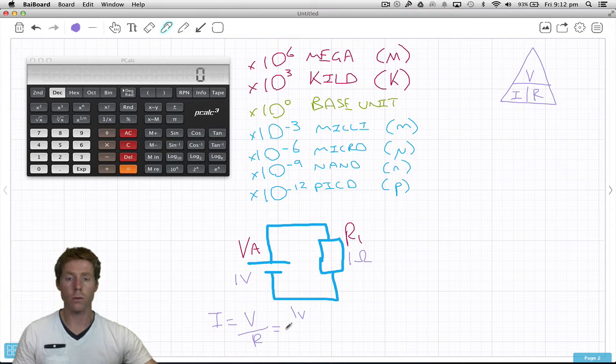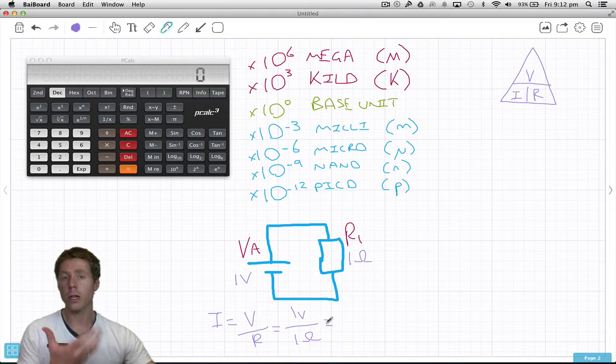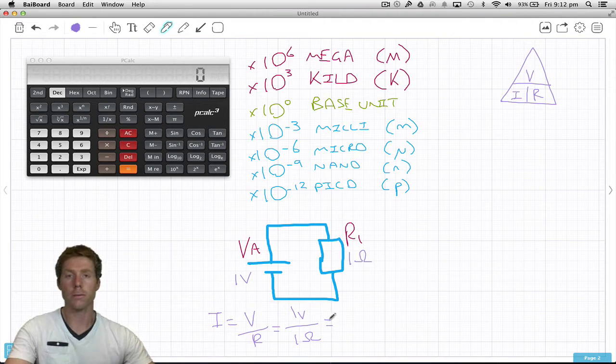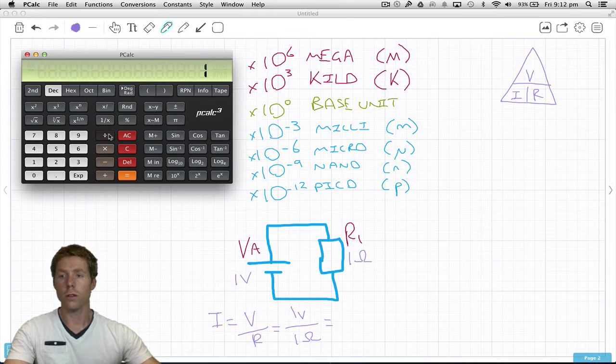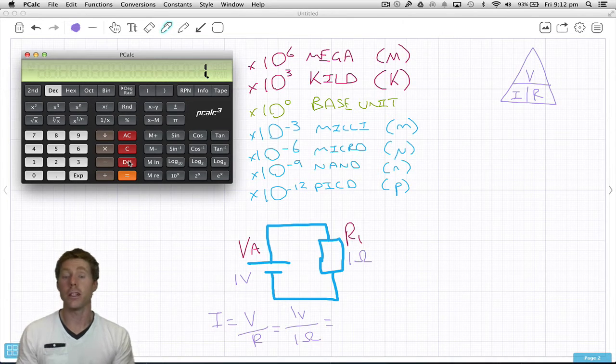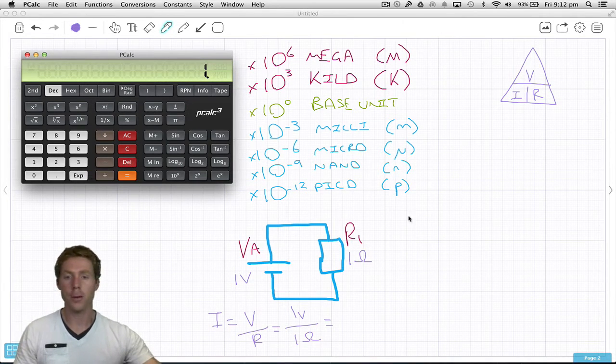Voltage is 1 volt, resistance is 1 ohm. Let's use our calculator to see the answer. 1 volt divided by 1 ohm, and as you guessed, it is 1 amp. Very simple.